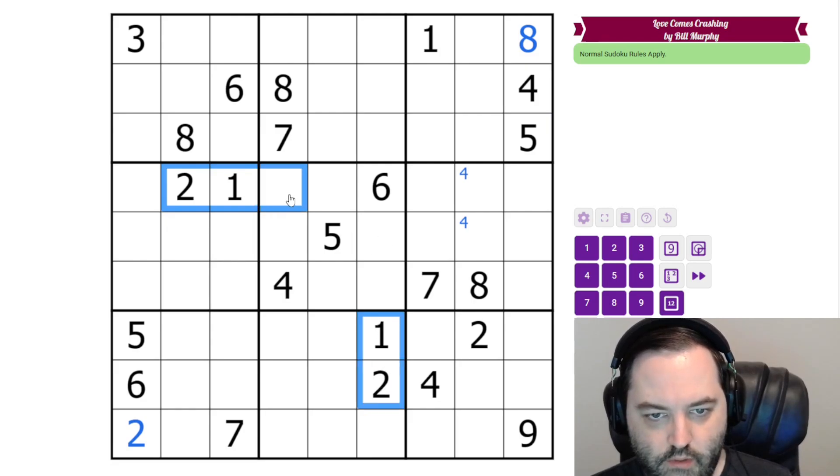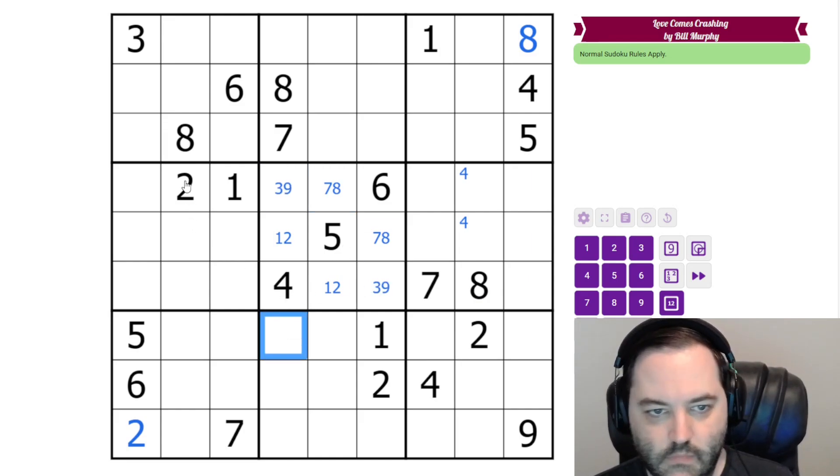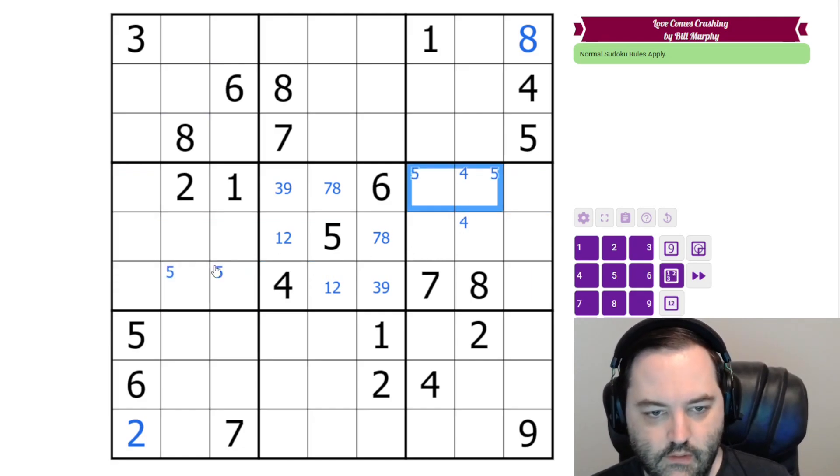I remember this. So we have a one, two, looking at those cells and at those cells. The only places for one and two are here. And likewise, we have seven, eight. These are seven, eight. This is a three, nine pair. Five in this box. Five in this box. The five can't be in those cells. So it goes here. Five can't go here, so it's limited to these cells.